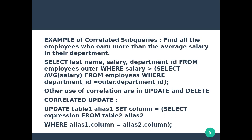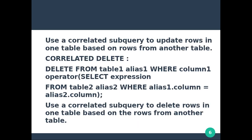Other uses of correlated subqueries are in UPDATE and DELETE statements. UPDATE table1 alias1 SET column = (SELECT expression FROM table2 alias2 WHERE alias1.column = alias2.column). Use a correlated subquery to update rows in one table based on rows from another table. Based on the first table rows, we can update the rows in one table.